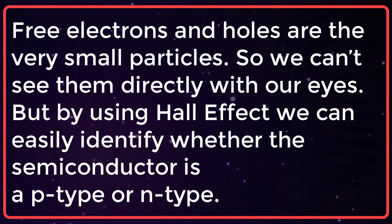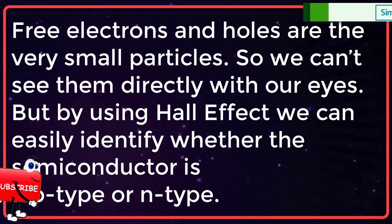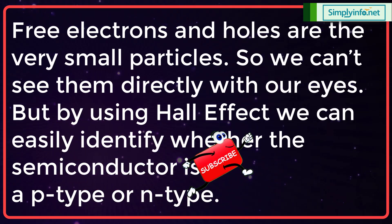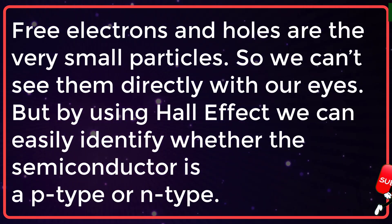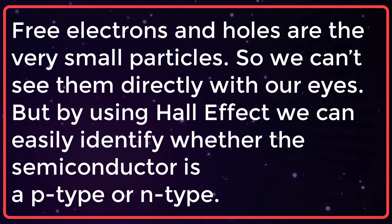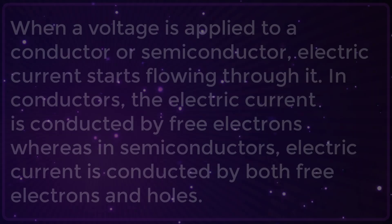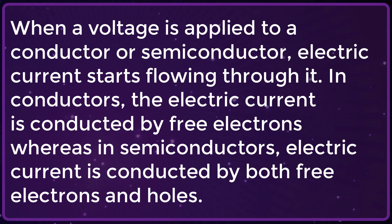Free electrons and holes are very small particles, so we can't see them directly with our naked eyes. But by using Hall Effect, we can easily identify whether the semiconductor is a P-type or N-type. When a voltage is applied to a semiconductor or conductor, electric current starts flowing through it. In conductors, the electric current is conducted by free electrons, whereas in semiconductors, electric current is conducted by both free electrons and holes.